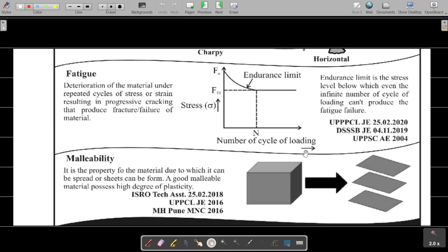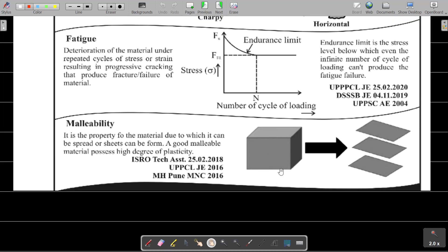Malleability is the property of the material due to which it can be spread or sheets can be formed. A good malleable material possesses high degree of plasticity.